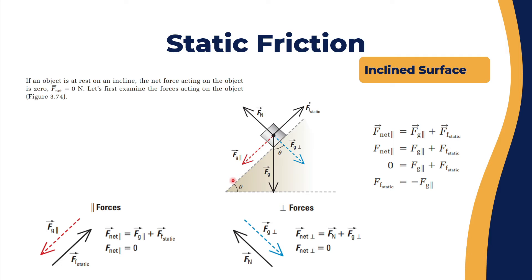This is the x direction and this is the y direction. Anything on the x direction is called a parallel force; anything on the y direction is called a perpendicular force. For the parallel forces, F static is going to the right and F gravitational is going to the left, so F net for the parallel forces equals the F gravitational parallel component. F gravitation cosine theta is the perpendicular component; F gravitation sine theta is the parallel component. Since F net is zero, the F gravitational parallel equals minus F static.